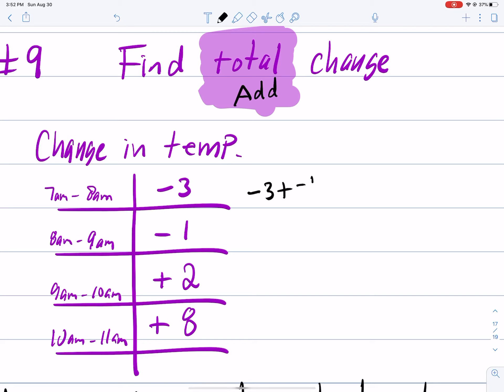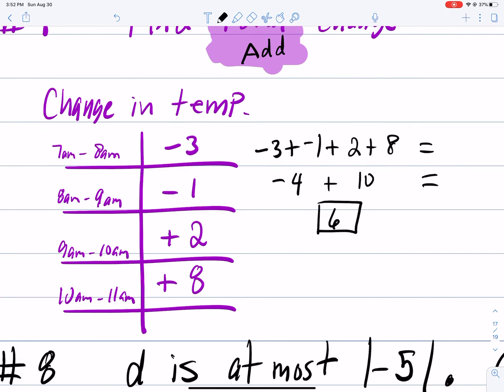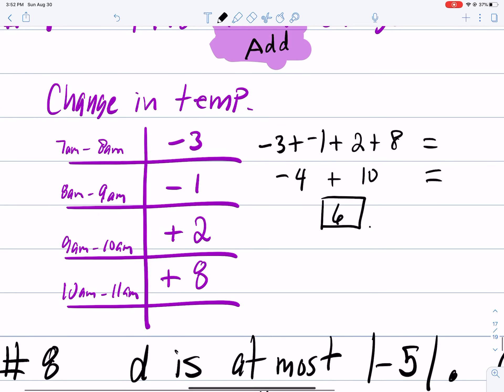So all that means is you look at these changes in temperature all the way in the right column and add them up. So you're taking negative 3 plus negative 1 plus 2 plus 8 and adding them. So negative 3 plus negative 1 that's negative 4, plus 2 plus 8 is 10. And you subtract these, 10 minus 4 is 6, and that's your answer. Keep the sign of the positive largest positive number 10. And so the change in temperature is 6, 6 degrees Fahrenheit.